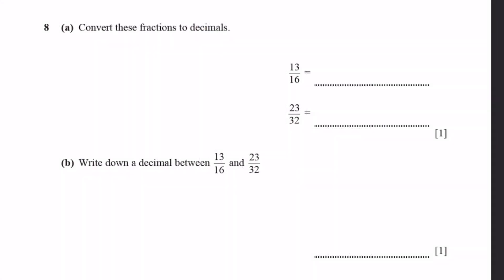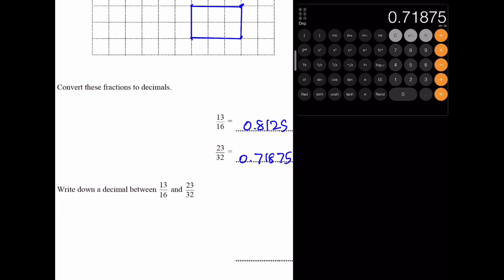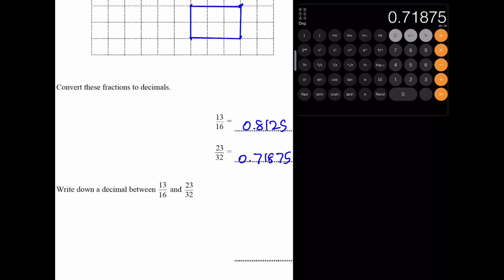Question 8a. Convert these fractions to decimals. 13 by 16 and 23 by 32. Let's get our calculator out. You can write down any decimal which is in between these two numbers. I'll be writing, for example, 0.8. It can be any decimal which is greater than 0.71875 and less than 0.8125. That's the answer.